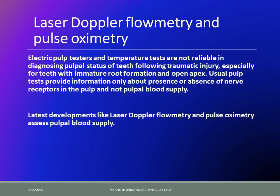Even in the cases of teeth that have been traumatically injured, teeth with immature root formation, or teeth with open apex — blunderbuss canals — electric pulp testers and thermal tests are unreliable. This is why we require true pulp testers like laser Doppler flowmetry and pulse oximetry. However, they are quite expensive and not easy to procure, because they assess the blood supply of the tooth.